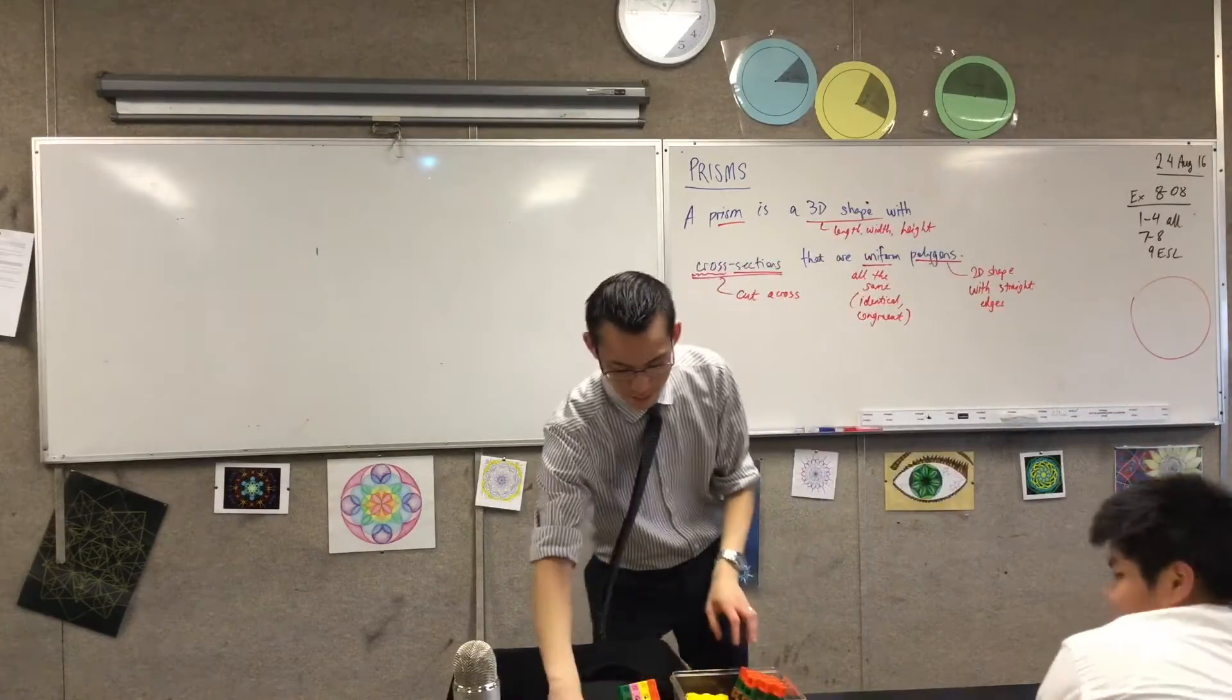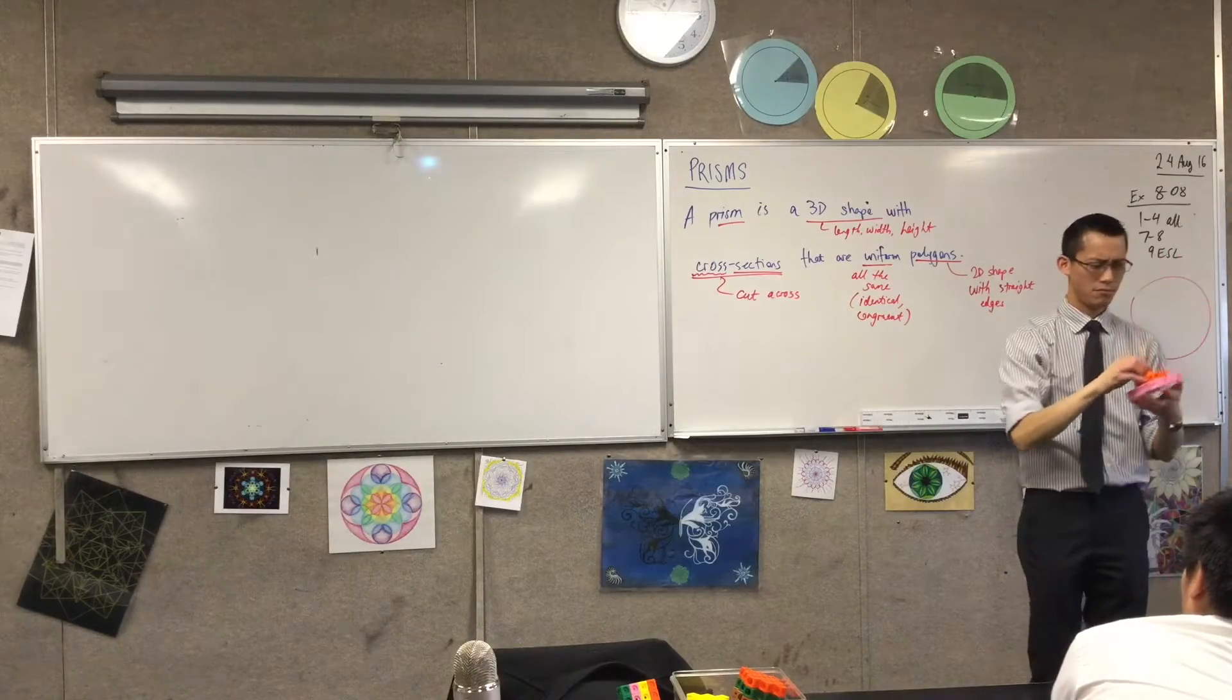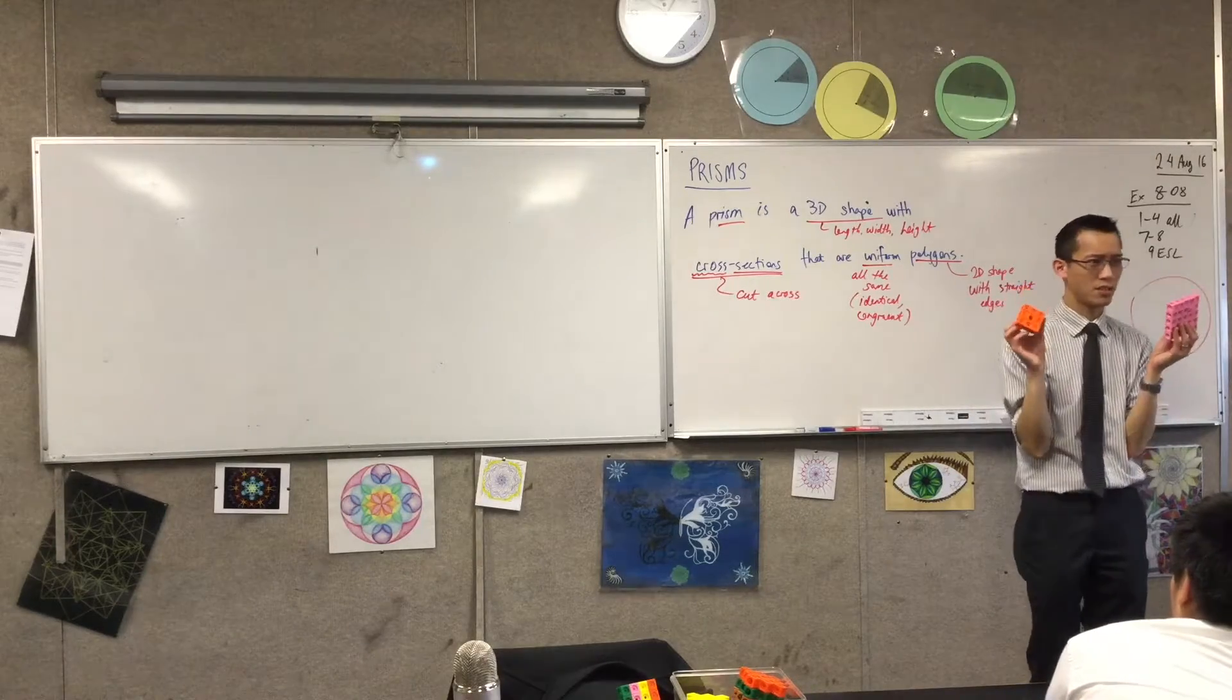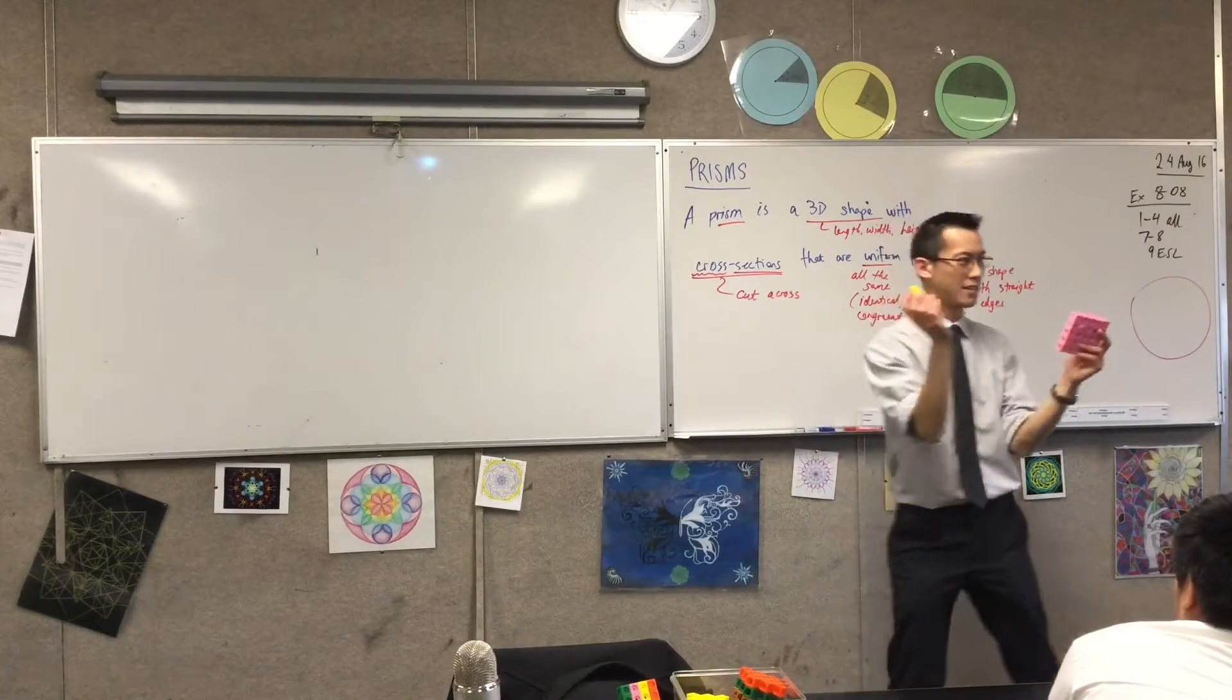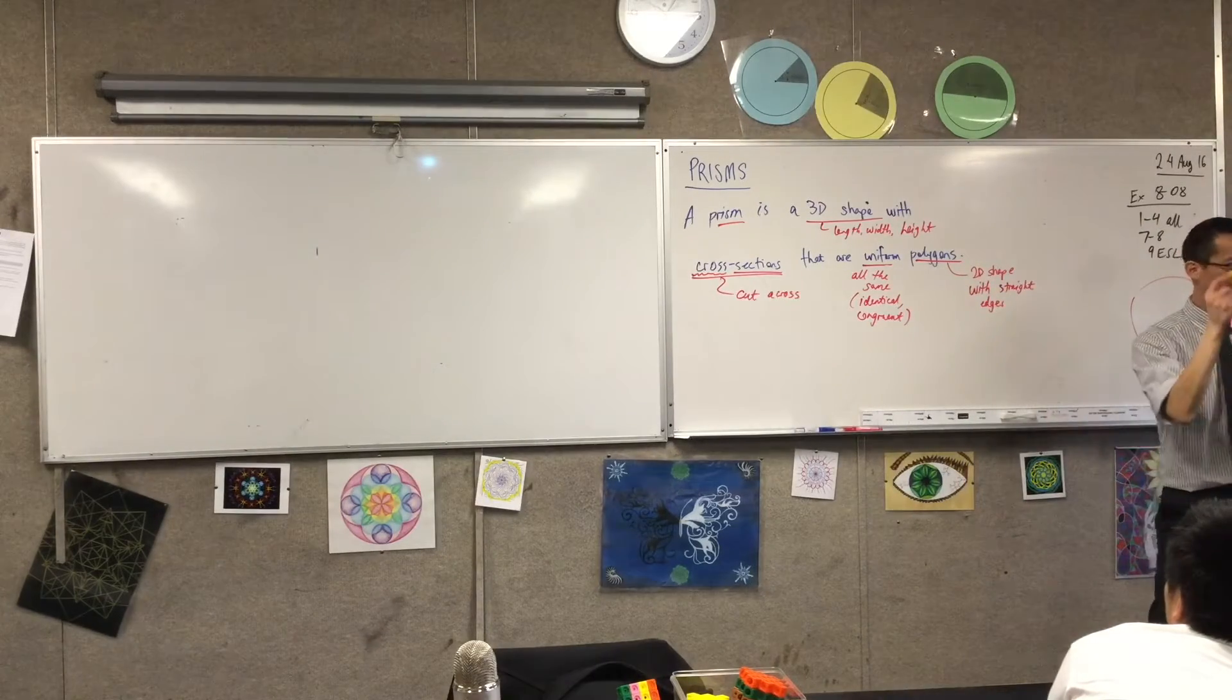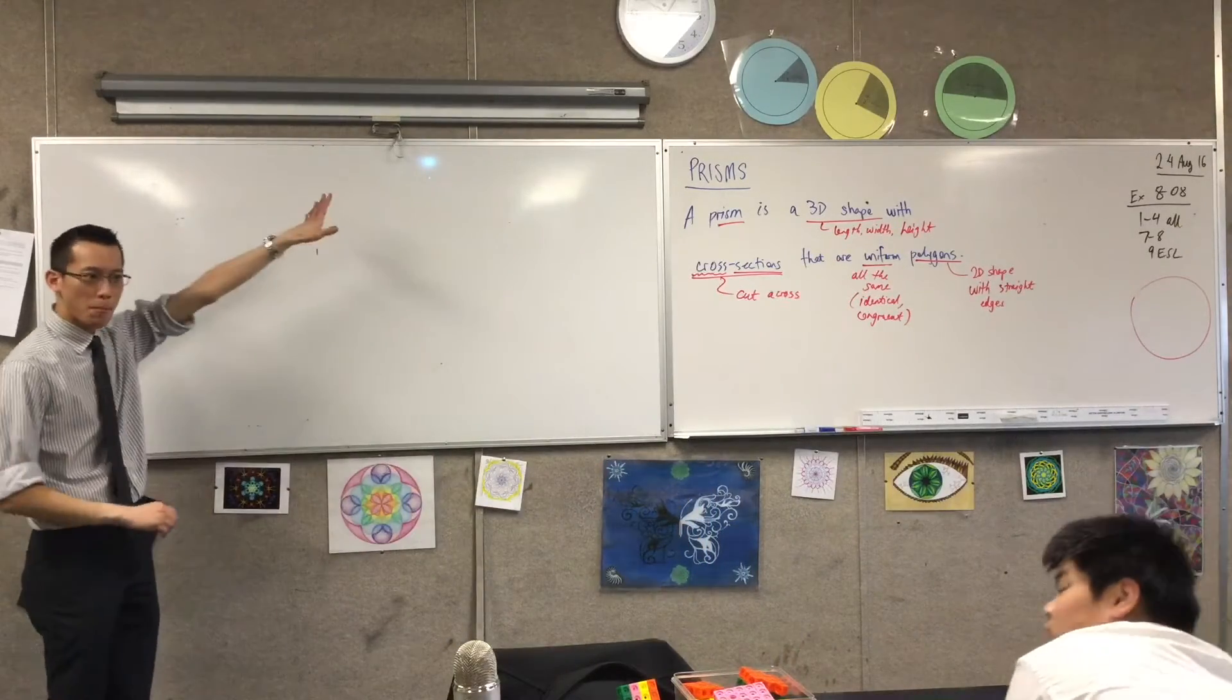One last one. That's a pyramid. But it's a pyramid, but look, all the cross sections are squares. Aren't they? They're not the same size. Ah, so they are all squares, but they're different sizes, aren't they? So they are not identical, they're not congruent. So this is not a prism, it's a pyramid. So you know what prisms are now.